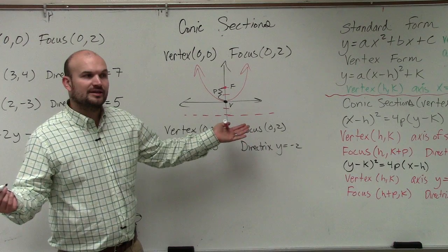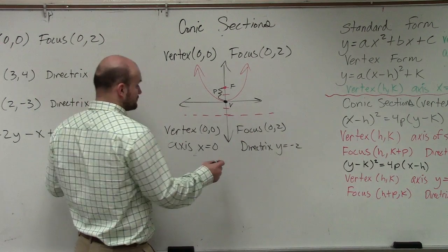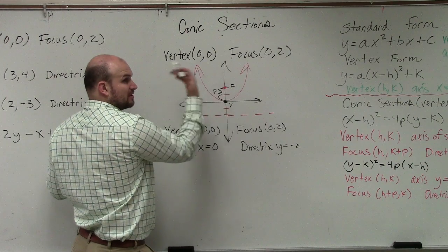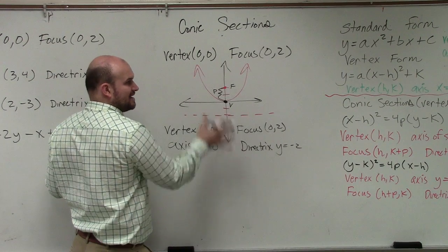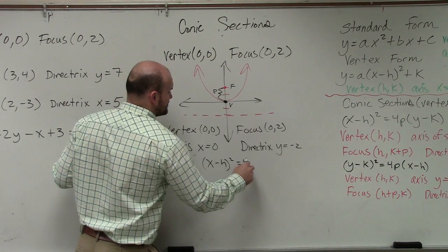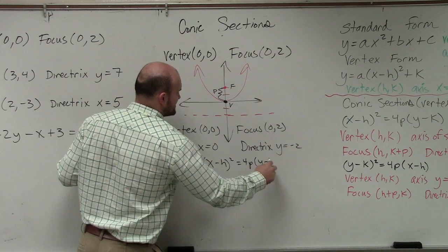Now, to write the equation of this line, basically, we know that it opens up. So therefore, we're going to have x squared. Anytime it opens up or down, x is going to be squared. So I have (x - h)² equals 4p times (y - k).